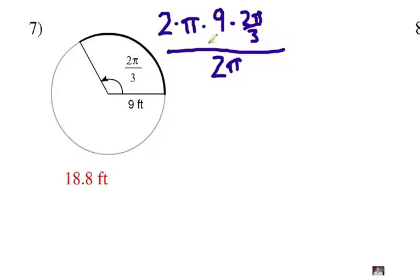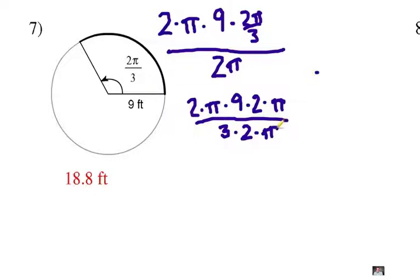Let's go ahead and move this 3 down to the denominator and cancel out some factors. So 2π, 9, 2π. In the denominator, we're going to have my 3 right next to my 2π. Cancel out common factors of 2 and π. And notice we can cancel out a 3. And let's see what's left. Nothing left in the denominator, but we have 3 times 2 times π, which is 6π. 6 times 3.14 is 18.8 feet.